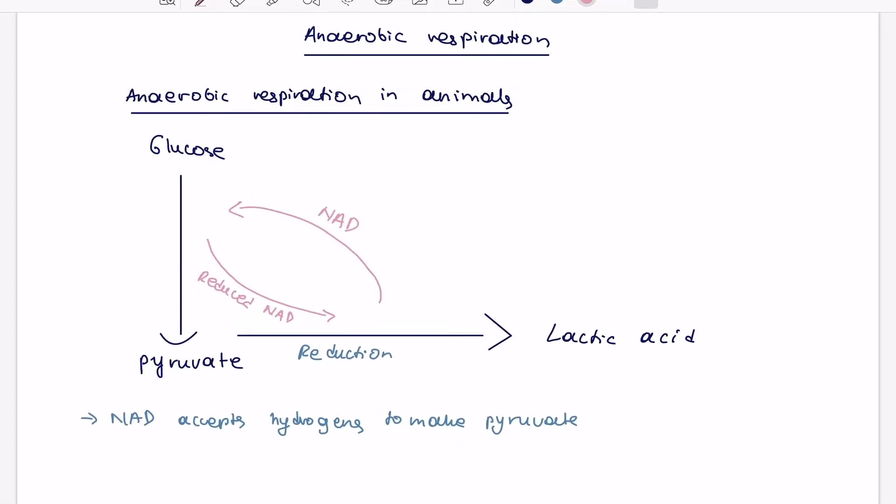So if the question asks you, what is the purpose of anaerobic respiration? Usually it's like a two marker question. You should just say it's in order to regenerate NAD in order to continue the anaerobic respiration. Just a quick note, remember that per glucose molecule will produce two ATP molecules, which is not much, but still better than nothing compared to the aerobic respiration.